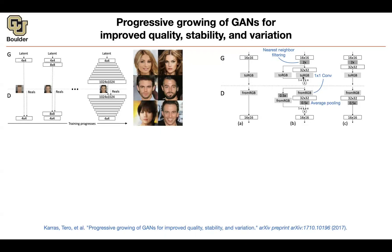Now you want to increase resolution to 32 by 32. The first step: do nearest neighbor filtering — copying and pasting the same pixel value into four locations, since each pixel turns into four pixels in the upsampled image. Then do a convolution to get 32 by 32 with some number of channels. But if we set alpha to zero, you take the 16 by 16 image, do nearest neighbor filtering, then turn it to RGB — which is basically the same operation as before. You're not adding any new parameters. So this route is exactly the previous route.